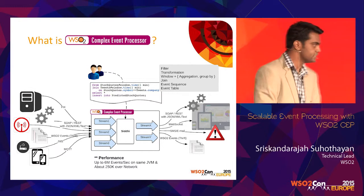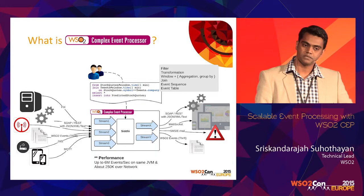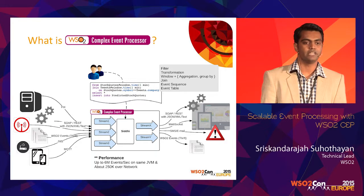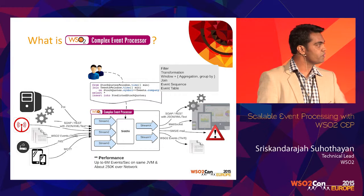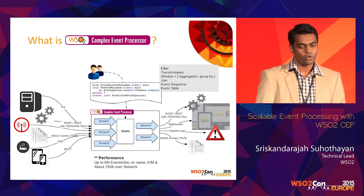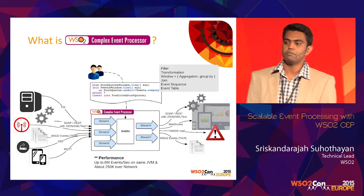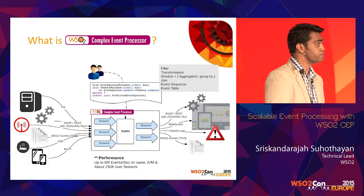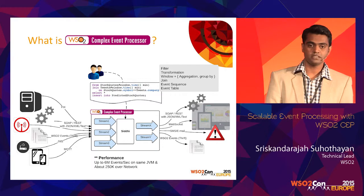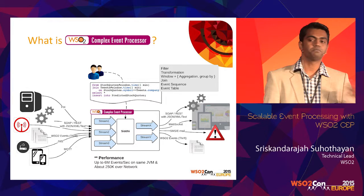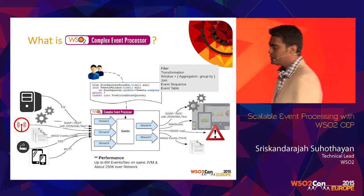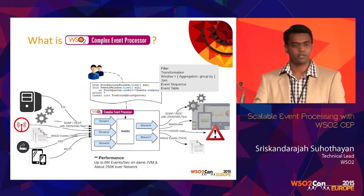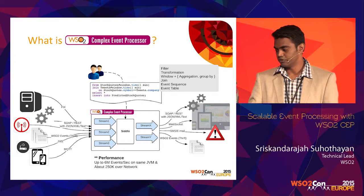CEP can receive from various transports and data formats. We receive data and categorize it into streams. When we have a stored query, we run execution logic on that and produce output streams. Those output streams can be mapped back into several data formats and pushed out via different transports. With the next release, we are introducing WebSocket, MQTT, and Kafka support — so customers waiting for those will have a good option.